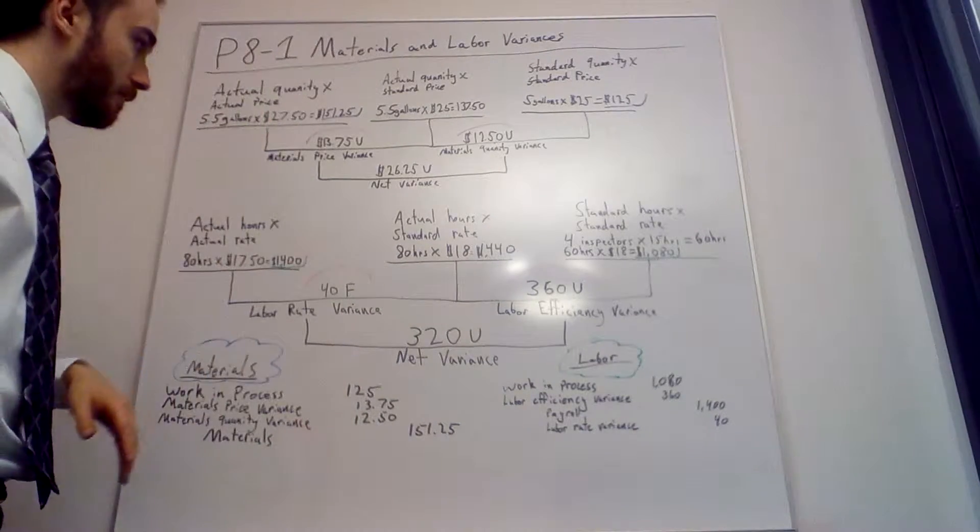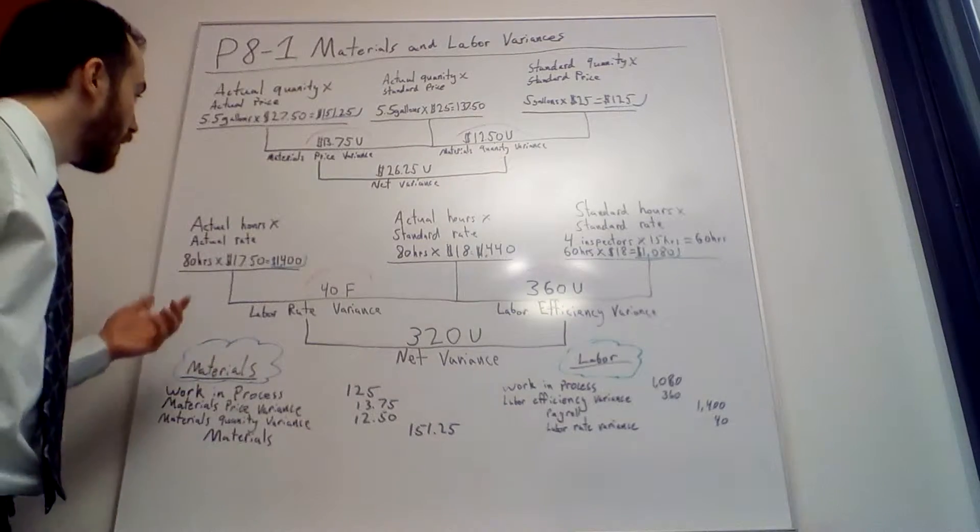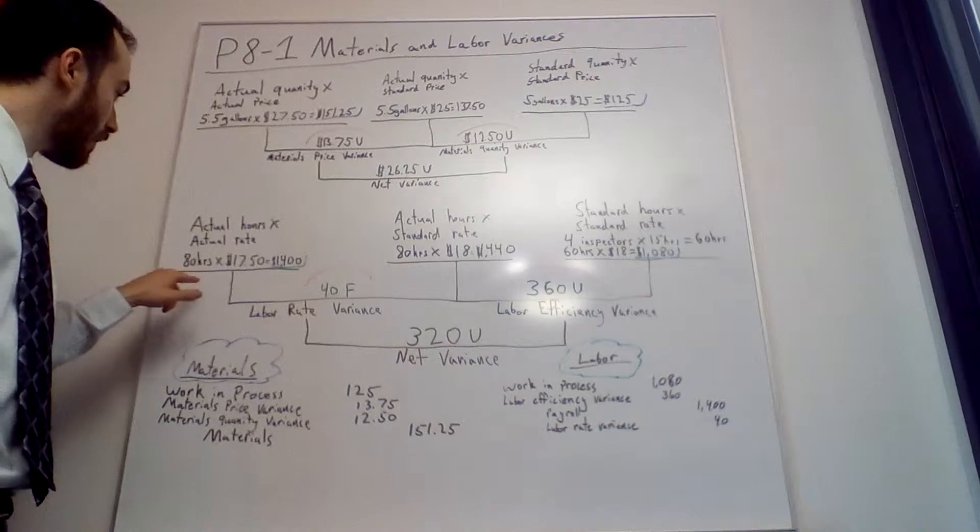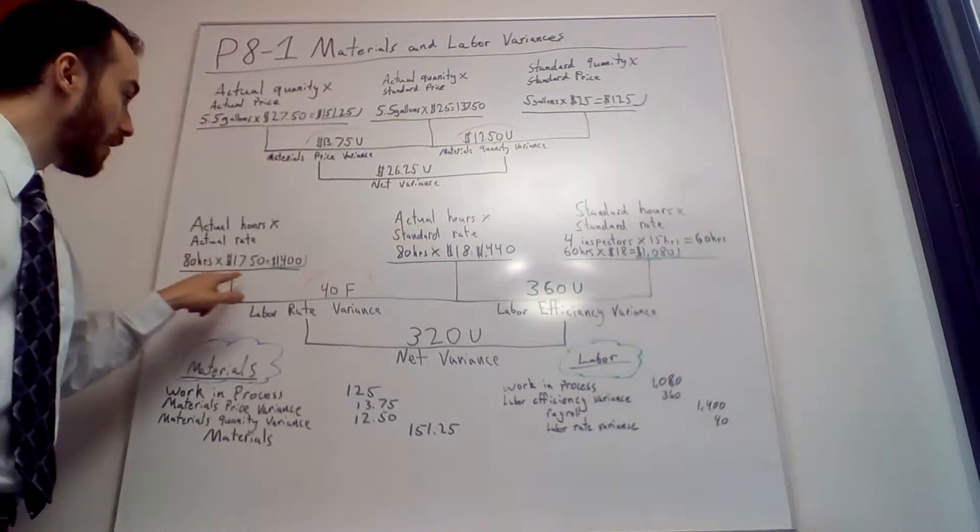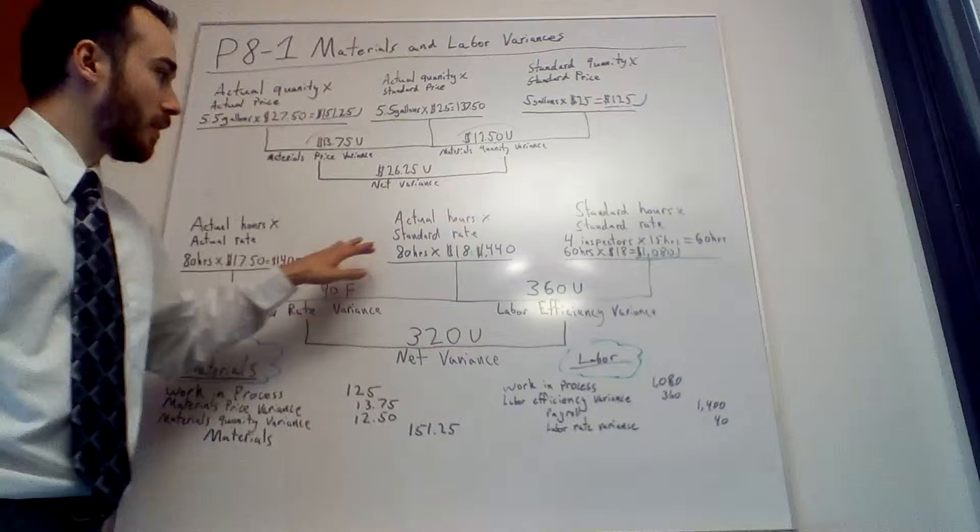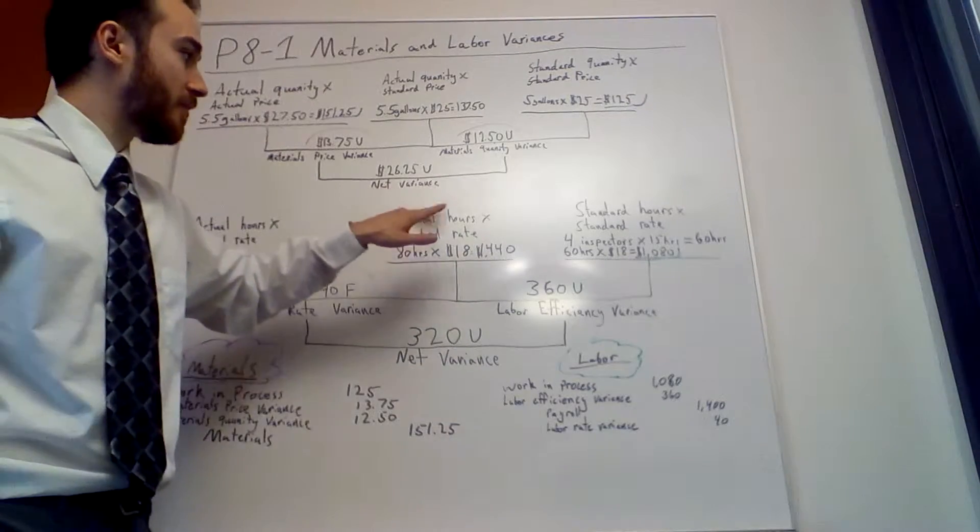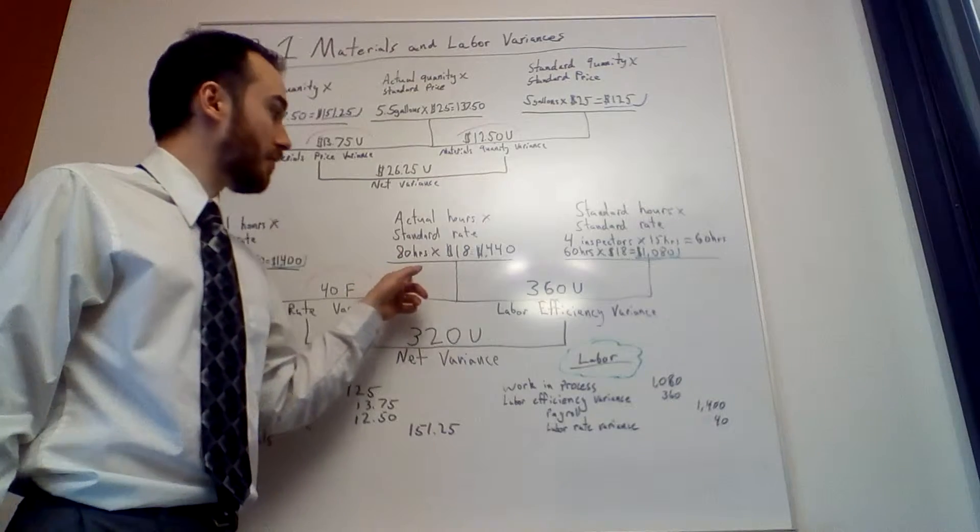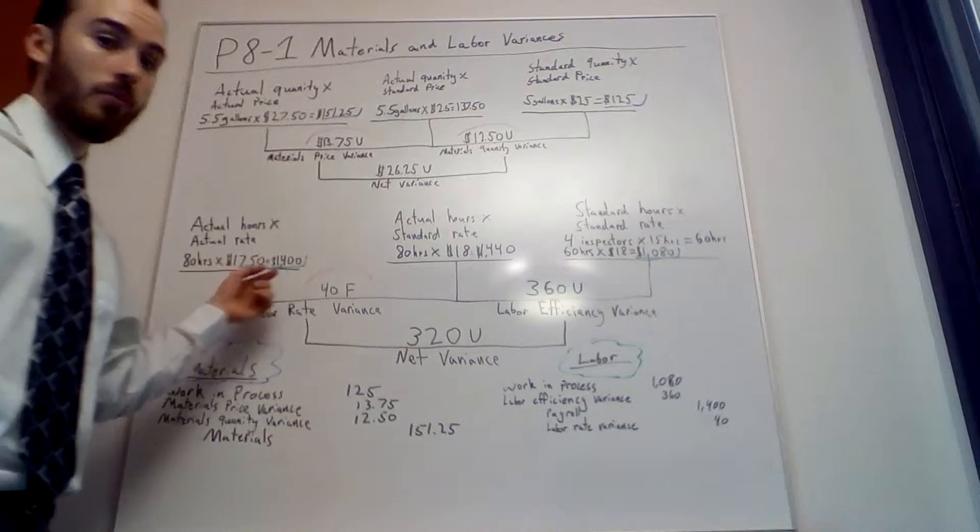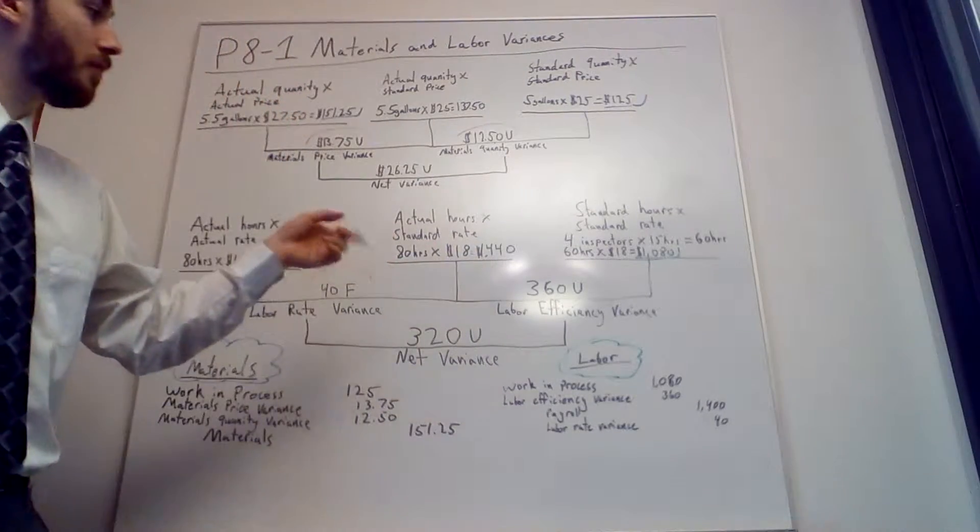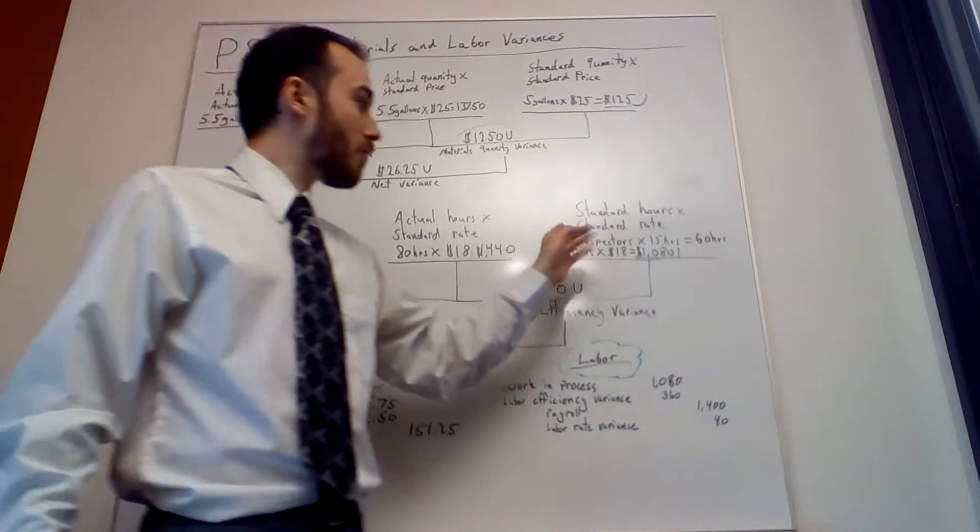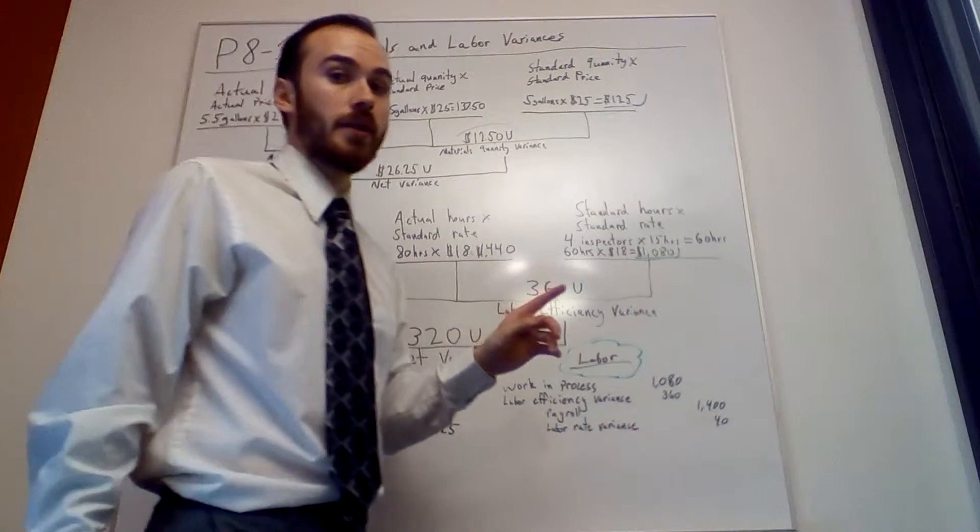Next we do labor. Labor is actual hours times actual rate. 80 hours times $17.50 gives us $1,400 we spent on labor. In the middle, you do actual hours times the standard rate, so 80 hours times the $18 an hour we should have paid them. We actually paid them less per hour, which turns out to be $1,440. On the right, we have standard hours times standard rate. You got to be careful on the standard one sometimes.